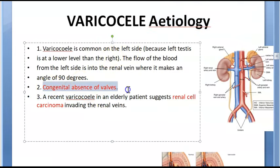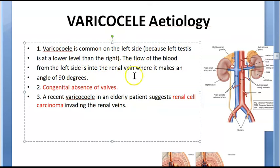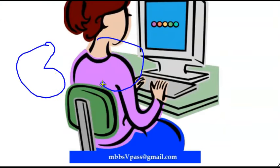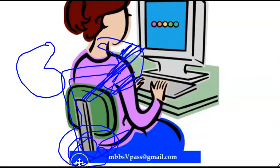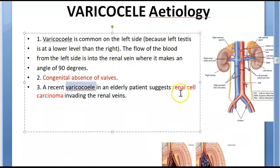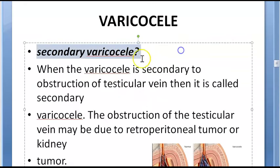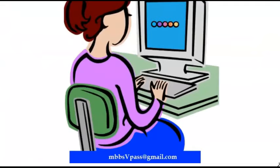In the etiology of varicocele, congenital absence of valves is one cause, and renal cell carcinoma invading the renal veins is another. Varicocele is more common on the left because the left vein is longer and drains at higher pressure. A varicocele can also indicate a renal cell carcinoma that is invading the veins on the same side.